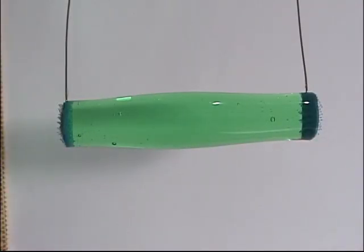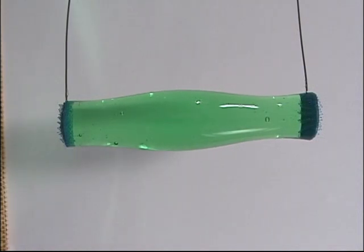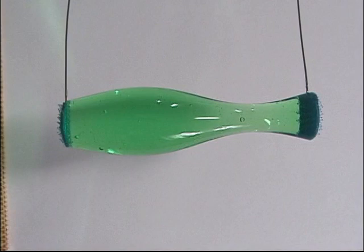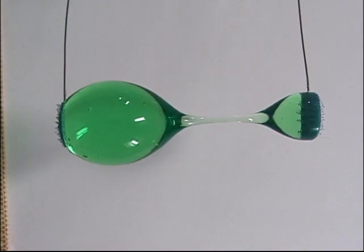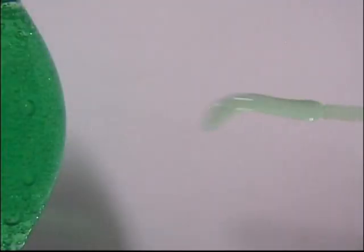Now the length of the liquid bridge is greater than pi times the diameter and this time-lapse video shows the onset of the Rayleigh instability which breaks the column into two drops.